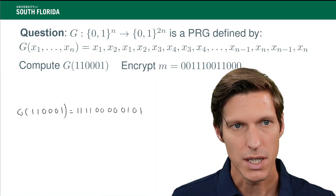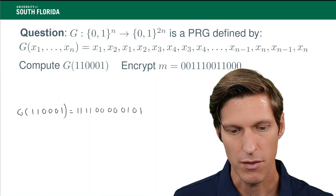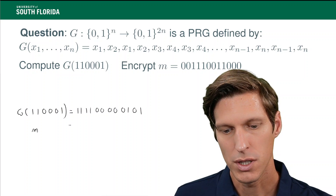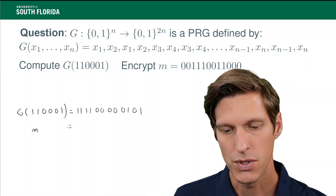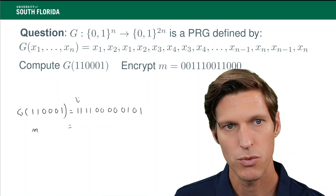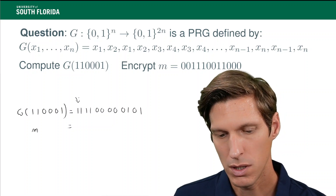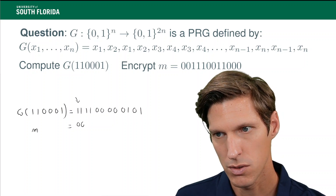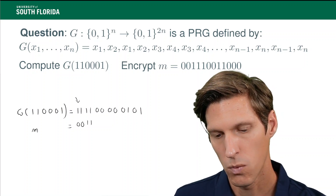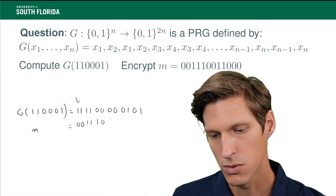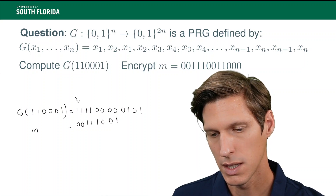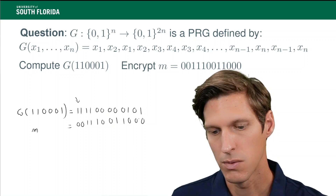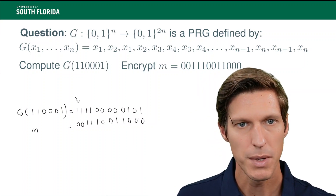Now, to use it as key stream as part of a stream cipher: what we do is write the key stream and the message. This is the key stream we've just produced. Then the message — it's convenient to write it down just underneath the key stream. So that would be 001111001, and then another one, and then 000. And then we do the XOR bit by bit.